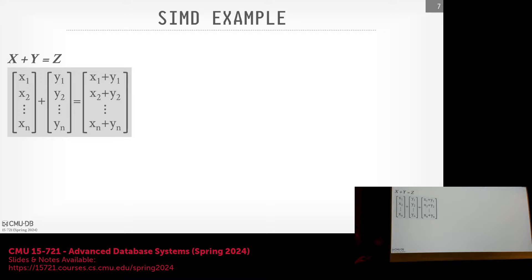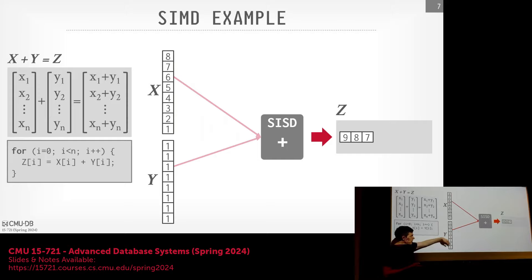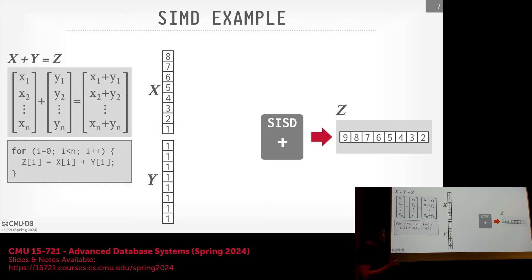Here's the classic SIMD example: take two arrays X and Y, add them together, produce array Z. With scalar code you have a for loop iterating over every element, running one add instruction and one store instruction per element. The compiler can unroll the loop, but at the end of the day it still executes a single instruction to add two numbers and write to memory.